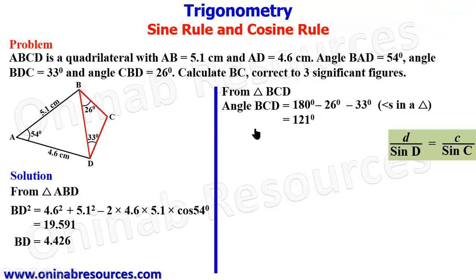So we can then go ahead to find BC using sine rule. We are looking for D, so BC over sine 33 degrees is equal to, we know C, 4.426 over sine 121 degrees.